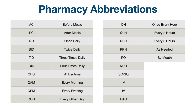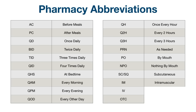PO: by mouth. NPO: nothing by mouth. SC or SQ: subcutaneous. IM: intramuscular. IV: intravenous. OTC: over-the-counter.